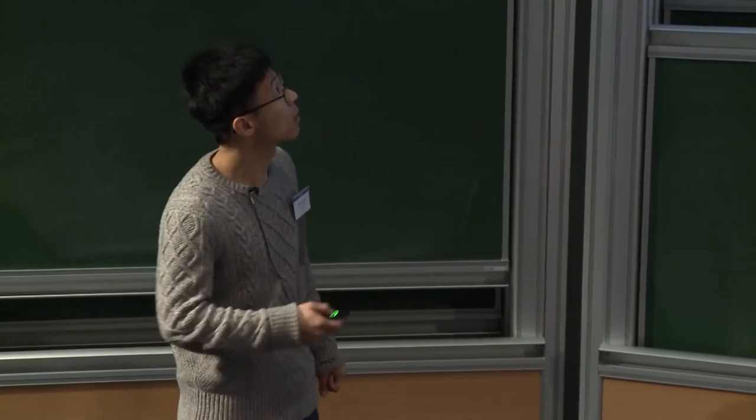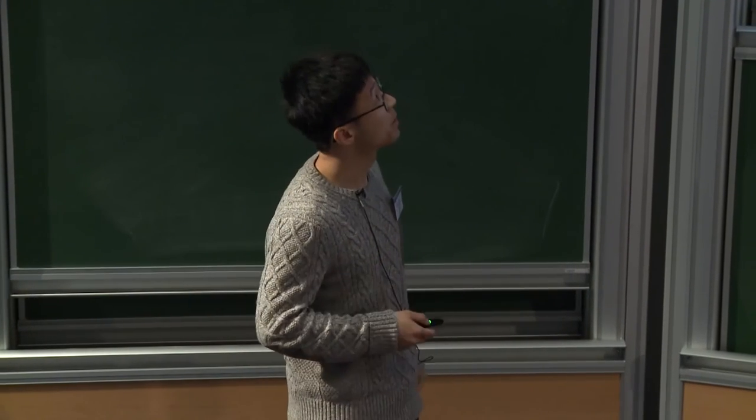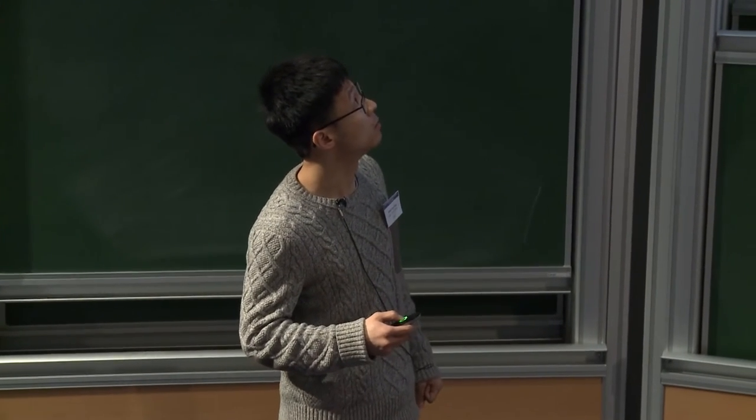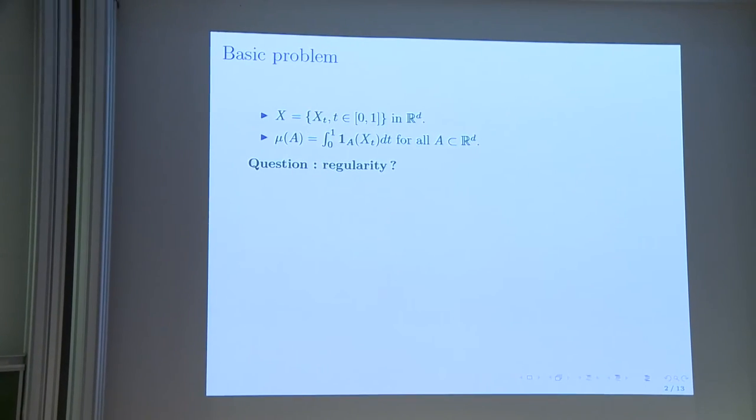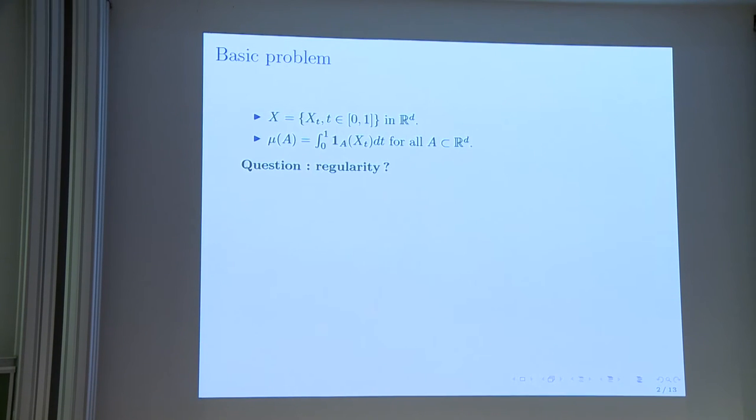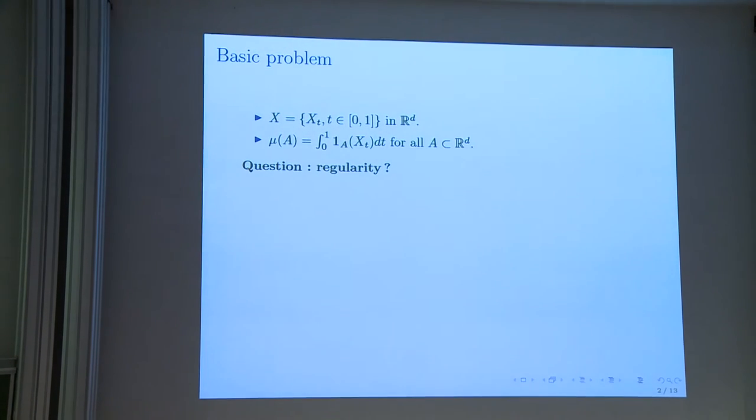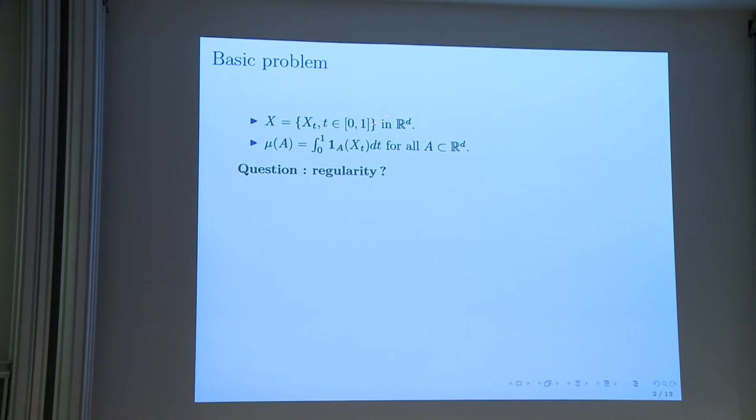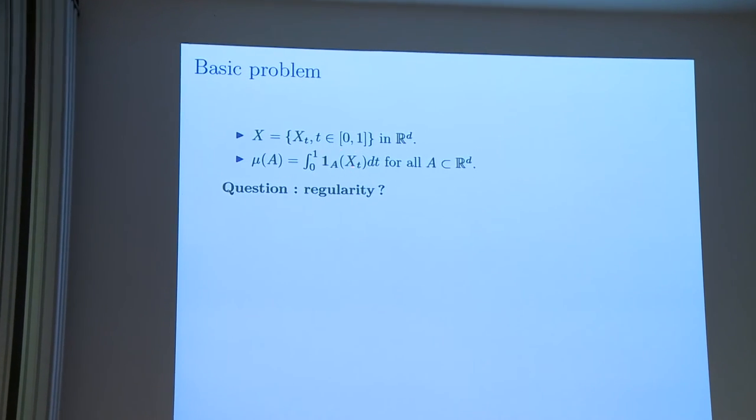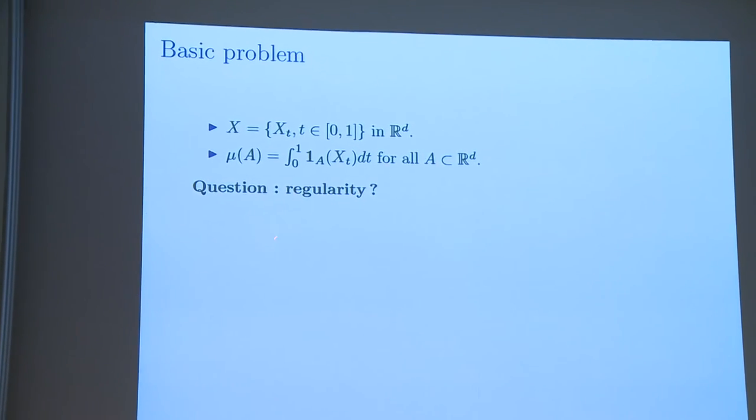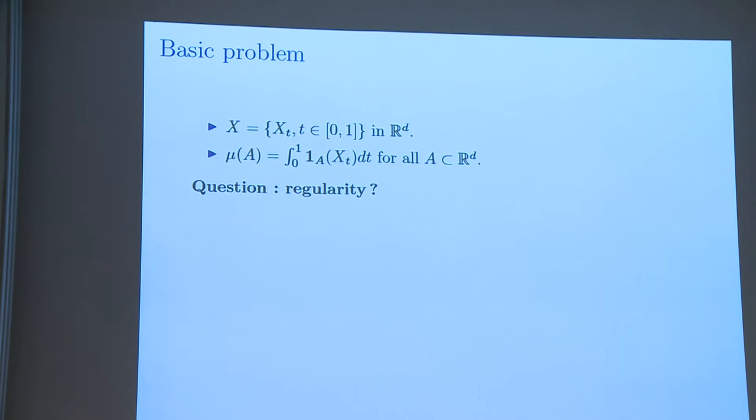Thin points of a class of Markov processes with jumps. The basic problem is the following: let us consider a continuous time stochastic process in R^D, X in [0,1]. Let us define the occupation measure of this process, which is simply the time spent by this process at any fixed measurable set in R^D. The question is the regularity about this measure, this random measure.